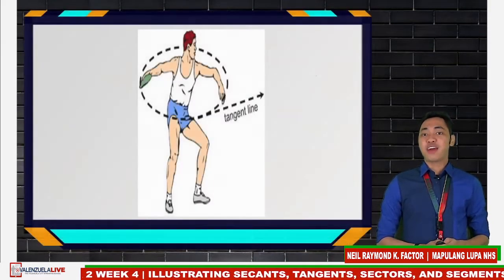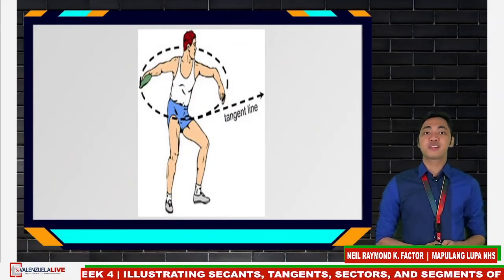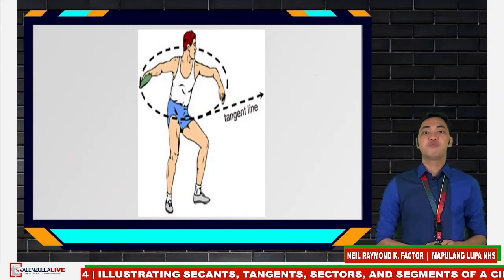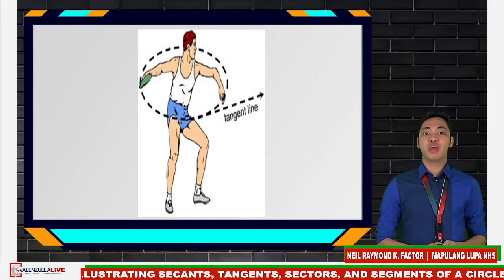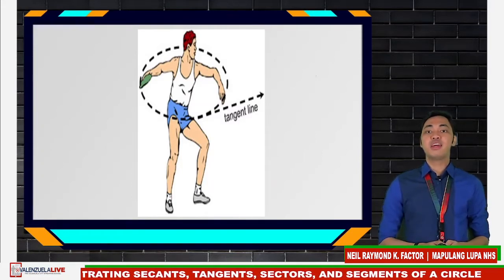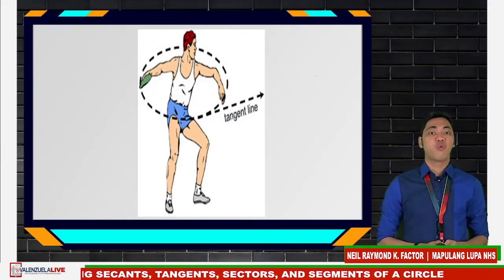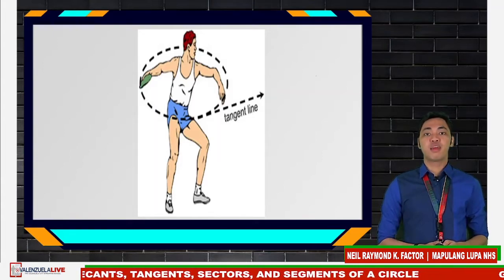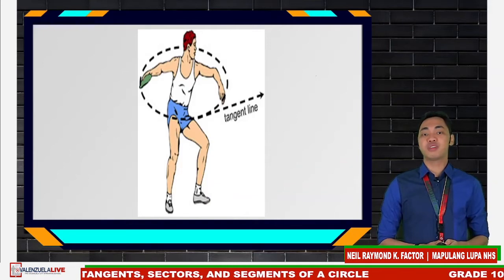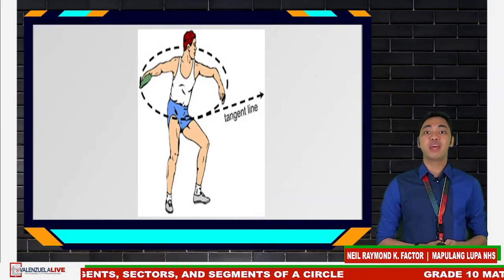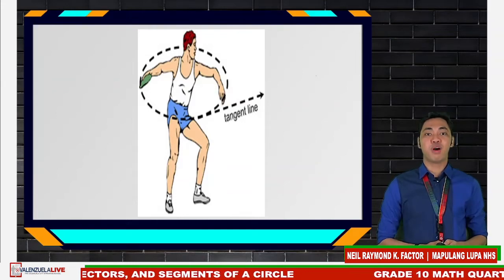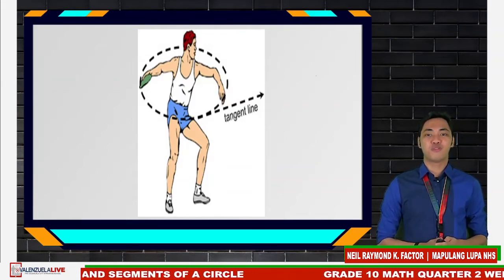Look at this athlete in the sport of discus throw. He's making a circular movement to gain momentum so that he can throw the discus a far range. When he gained enough momentum, he's going to let go of the discus, and it will be tangent to the circle that he formed while gaining momentum. This again illustrates the concept of tangent.